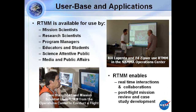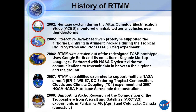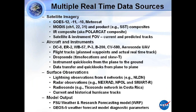Here's the history of the real-time mission monitor. It started with a heritage system during the Altus Cumulus Electrification experiments — a standalone Java-based system. Some improvements were made for the TCSP experiment in 2005. In 2006 came the current instantiation, where we're utilizing Google Earth as the visualization engine. During NAMA, we had one plane — the DC-8. In 2007, we supported the TC4 experiment and tracked three planes simultaneously. We then did Hurricane Arison in November 2007, and just two weeks ago we supported the Arctis field experiment in Fairbanks, Alaska, with a summer version in Cold Lake, Alberta.